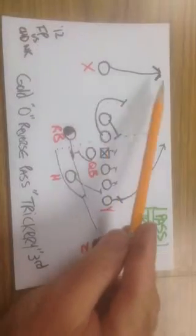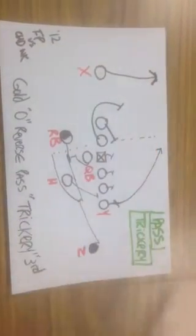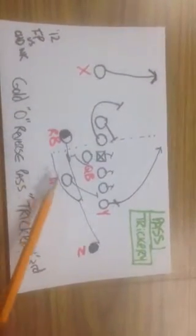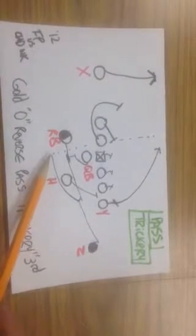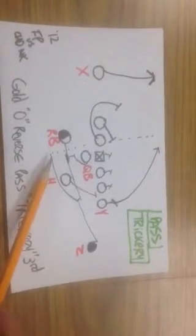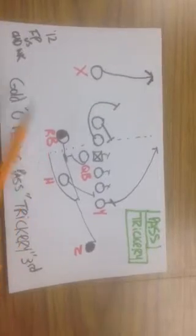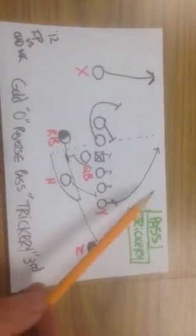And our X receiver is clearing out the area but may be open too. So the Z receiver as he comes back will literally have two people to throw to. Either the X, the Y.